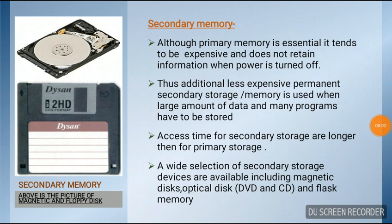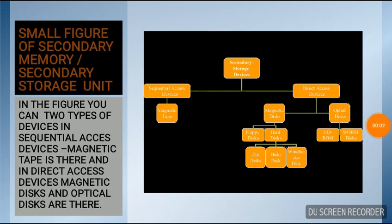Secondary memory: although primary memory is essential, it tends to be expensive and does not retain information when power is turned off. Thus, additional less expensive permanent secondary storage is used when large amounts of data and many programs have to be stored. Access times for secondary storage are longer than for primary storage. A wide selection of secondary storage devices are available, including magnetic disks, optical disks, DVD and CD, and flash memory. In the figure, sequential access devices include magnetic tape, and direct access devices include magnetic disks and optical disks.